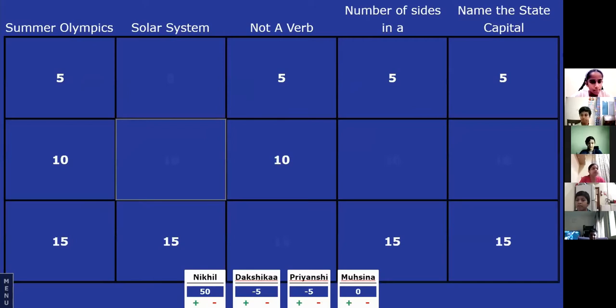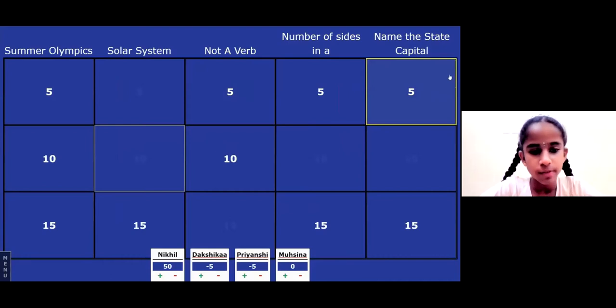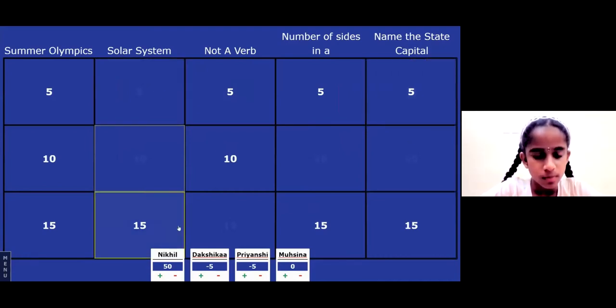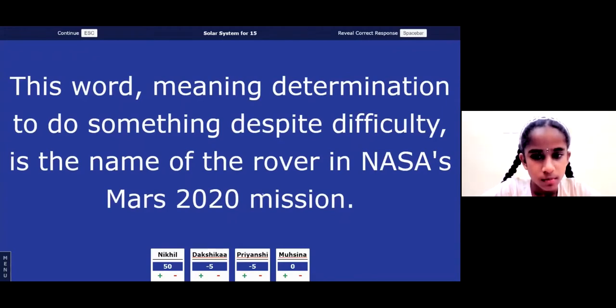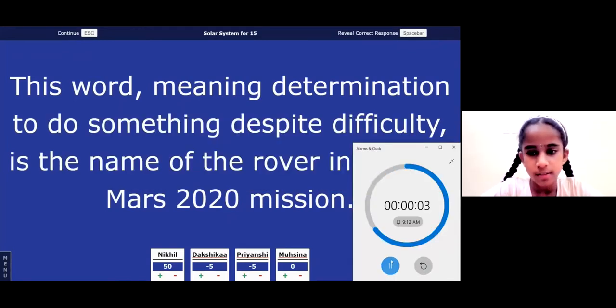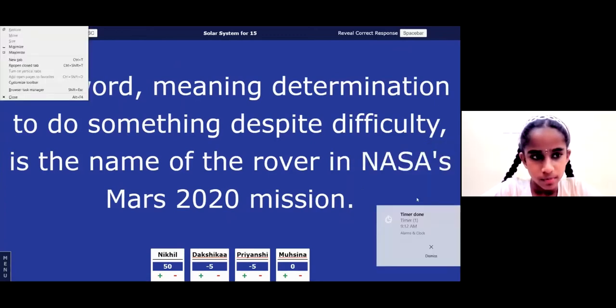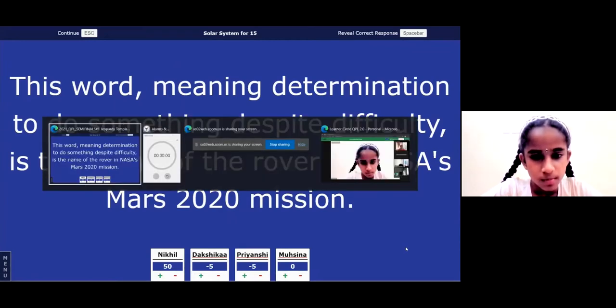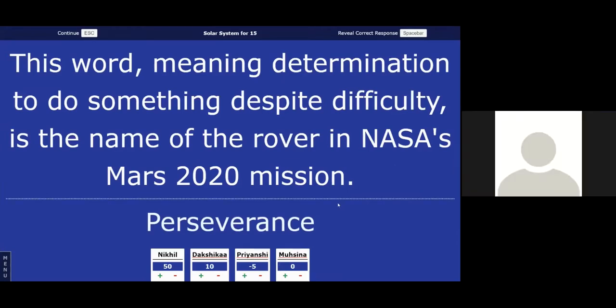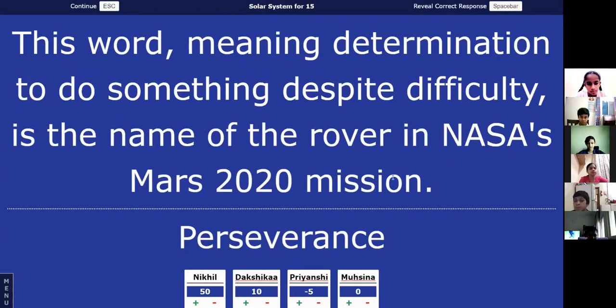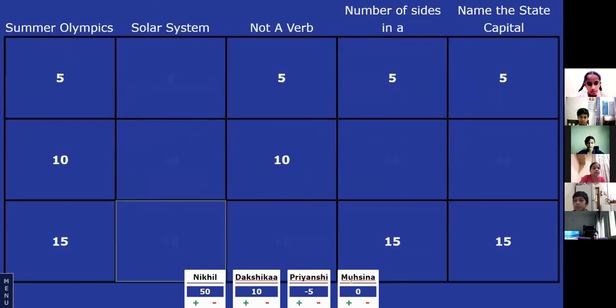Dakshika, please make a selection. Solar system 15. Your clue is this word, meaning determination to do something despite difficulty, is the name of the rover in NASA's Mars 2020 mission. Perseverance. Perseverance is the right answer. Good job. So, even though Nikhil is making this a runaway contestant, please try to answer, make your choices wisely so that you can have a score in case that you are in the wait list for the finals for some reason.